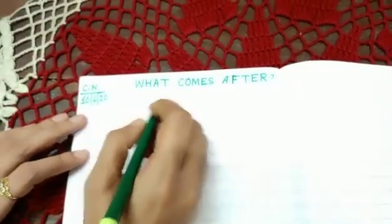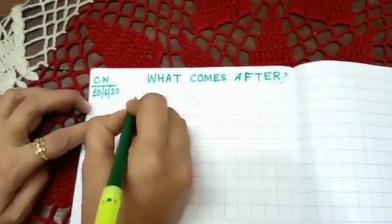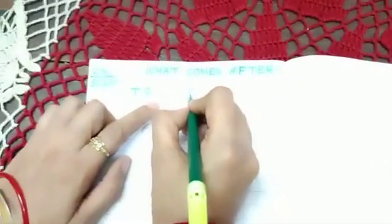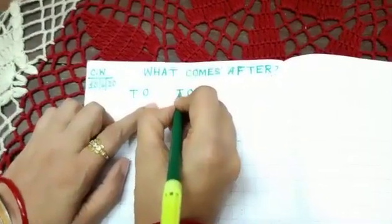Then leave one box and write ones, tens. Again leave two boxes and here you will write ones, tens. Okay children.